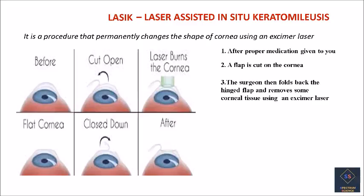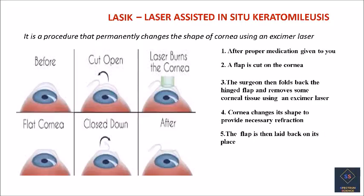The surgeon removes some corneal tissue using an excimer laser. The cornea then changes its shape to provide the necessary refraction. The flap is then laid back in its place, and the cornea is allowed to heal naturally.